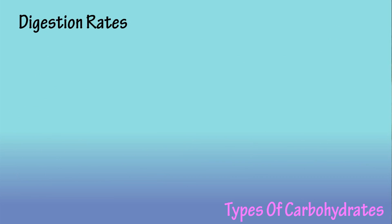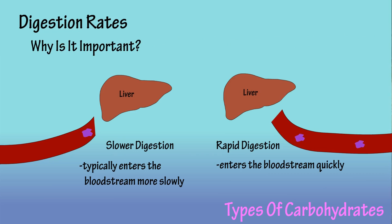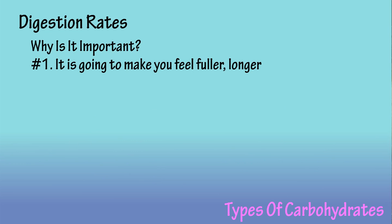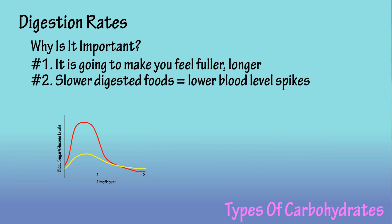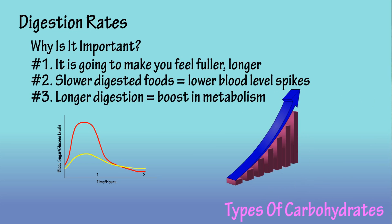With both simple and complex carbohydrates, I've mentioned fast and slow digestion — why is that important? Three reasons. Number one, it's going to make you feel fuller longer; rapid digestion means hunger returns quicker, which leads to more consumption. Number two, typically slower digested foods cause lower blood level spikes. And number three, slower, longer digestion means the body is using more energy over a longer period of time to break down the food, which is an increase or boost in metabolism.